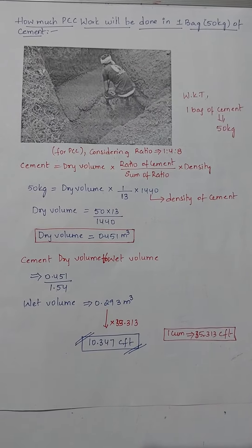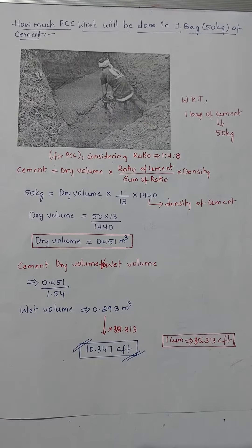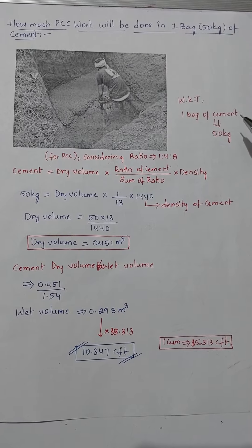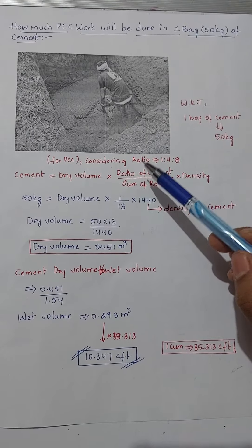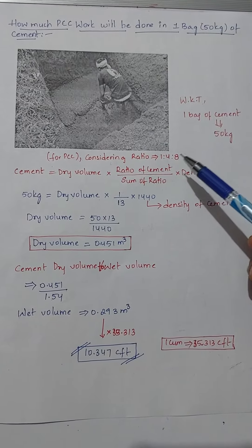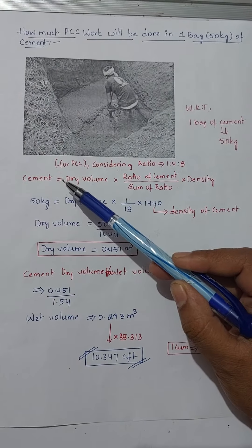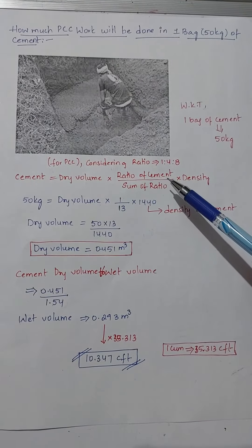Hello everyone, today in this video we will know how much PCC work will be done by using one bag of cement. We know that one bag of cement can be 50 kilograms. For PCC work, here we consider the ratio is 1 is to 4 is to 8, so cement equals to dry volume into ratio of cement by sum of ratio into density.